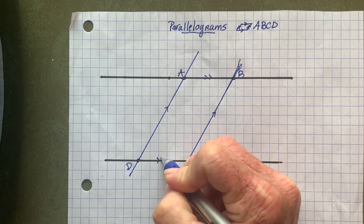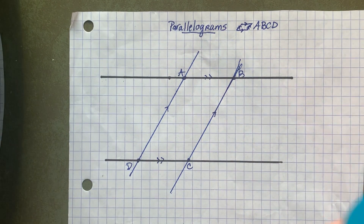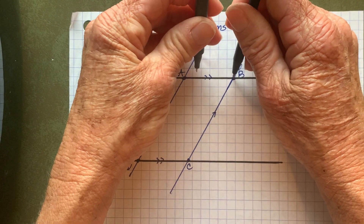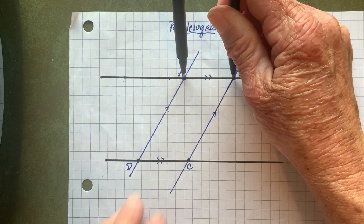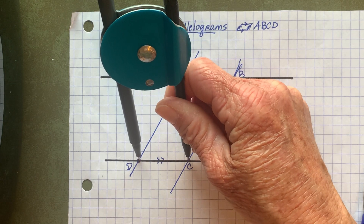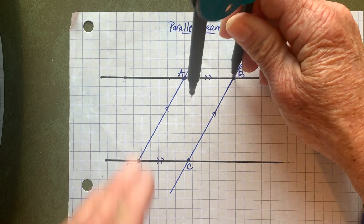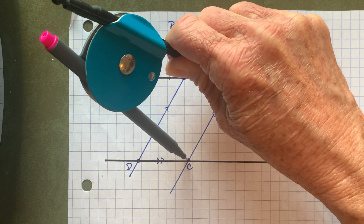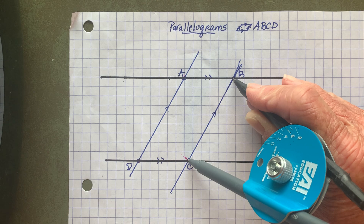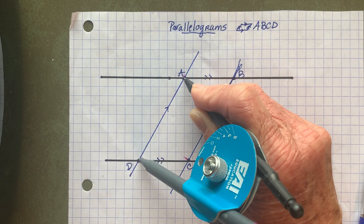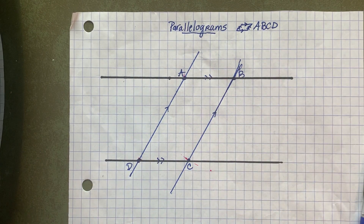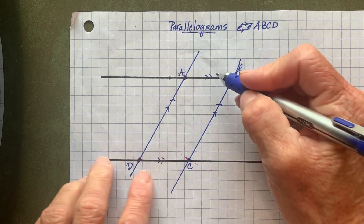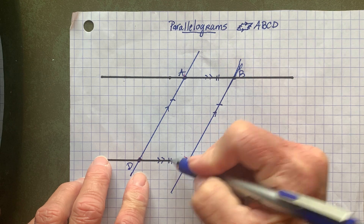Opposite sides are parallel. And I'm just going to use my compass and do a little exploring. If I measure the distance between points A and B, you can see that it's equal to C and D. And the same thing is going to be true if I measure the distance between points B and C — that's going to equal A and D. So not only are the opposite sides parallel, they're also congruent to each other.